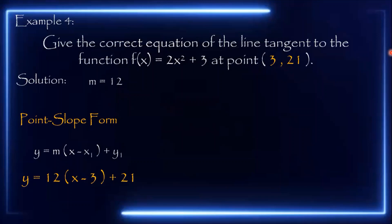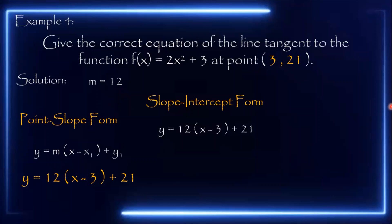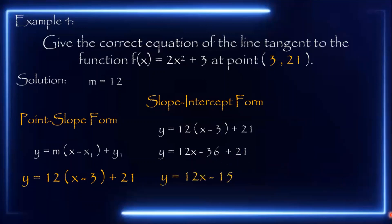For the slope-intercept form, we transform y = 12(x − 3) + 21 by distributing 12: 12 times x gives 12x, and 12 times negative 3 gives negative 36, then copy plus 21. Combining negative 36 and positive 21 gives y = 12x minus 15. This is the slope-intercept form of the tangent line.